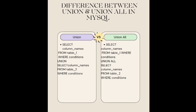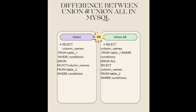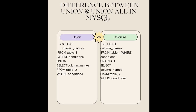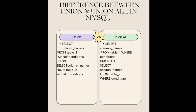Syntax for Union All: SELECT column_names FROM table1 WHERE condition UNION ALL SELECT column_names FROM table2 WHERE condition.